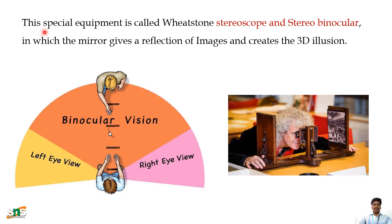This special equipment is called the Wheatstone stereoscope. There is also a stereo binocular in which the mirror gives a reflection of images and creates the 3D illusion, so that the left eye sees the left eye view and the right eye sees the right eye view, which combines to form binocular vision.